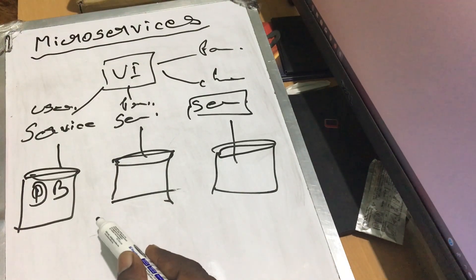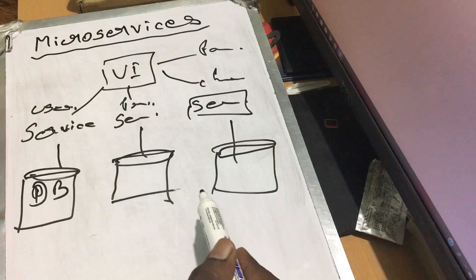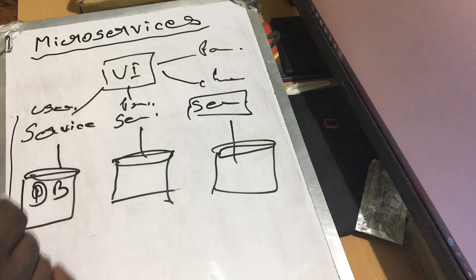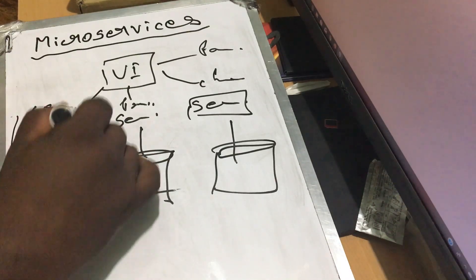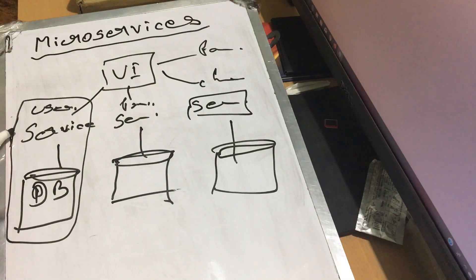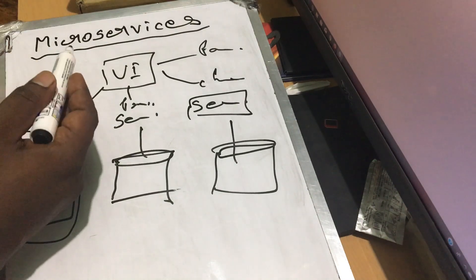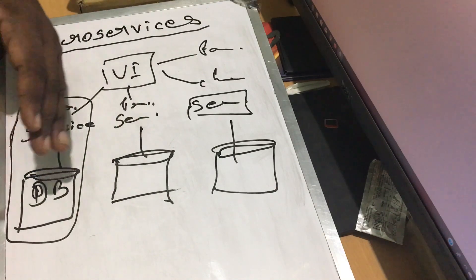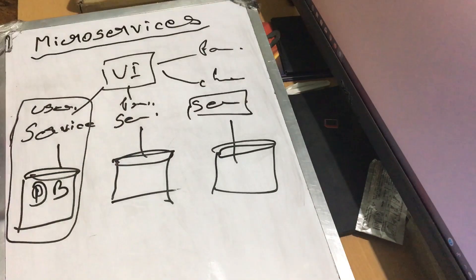If you want to make a change, you only need to change that one service. What you do is apply it to that service alone. So if you change something in the user service, you can test and deploy just that service without impacting any other functionality.